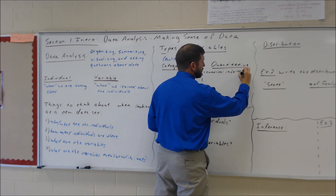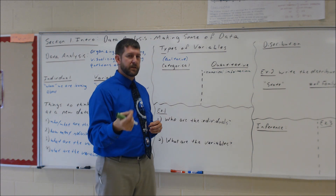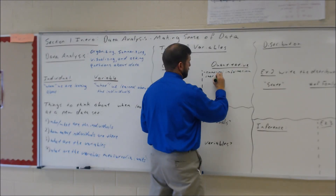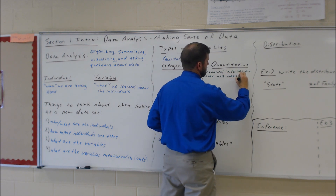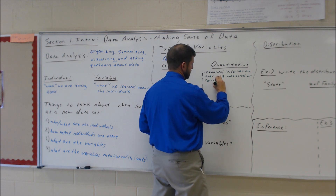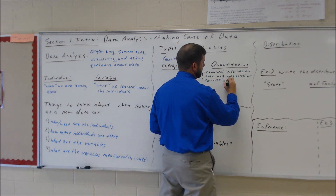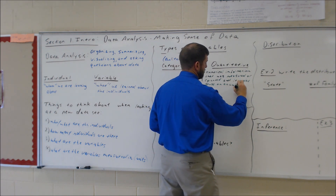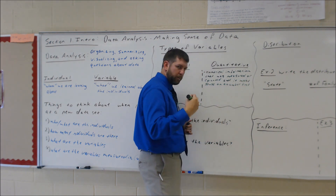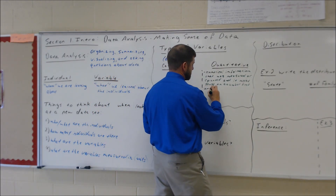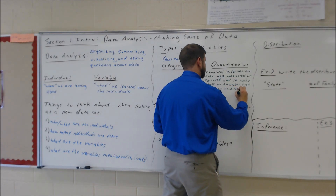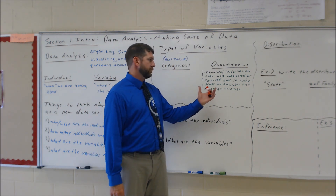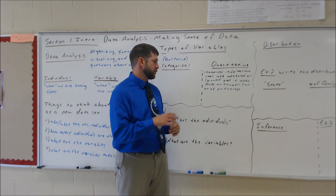It makes sense to put quantitative things in order, to rank them, or to take an average. So let's think of some things we can measure or count and make sense of by putting them in order for different individuals, ranking them, or averaging them all together. Maybe something like height — it makes sense to collect a bunch of heights and put people in order on a number line, or to average their height for the group.